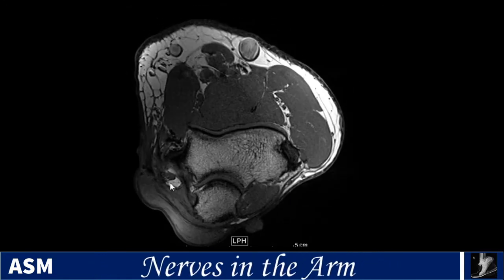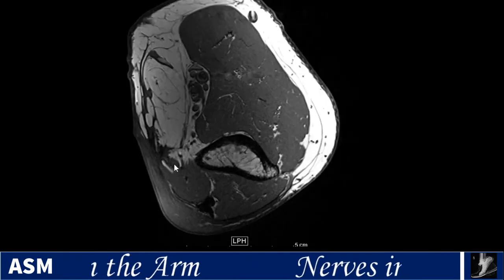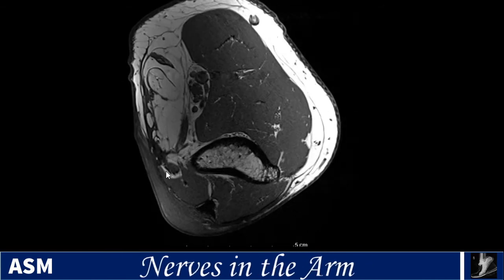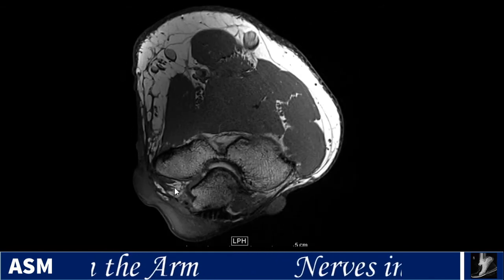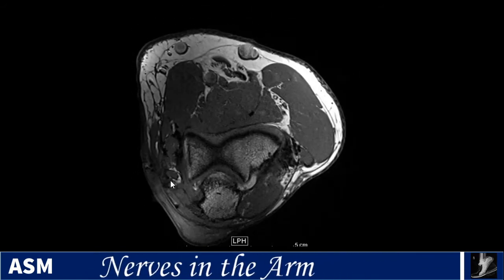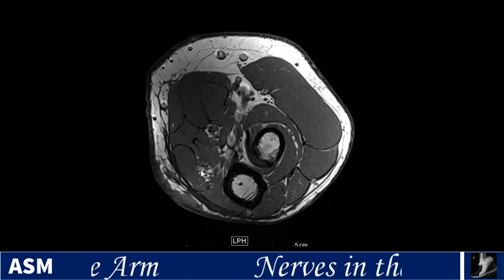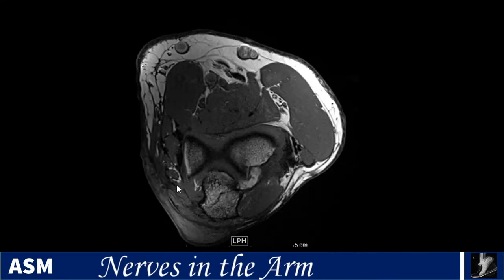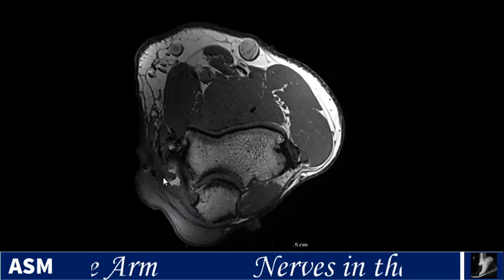The ulnar nerve arises from the medial cord of the plexus and runs in the posteromedial aspect of the arm. In this patient there is extensive scar tissue around it from prior surgery for ulnar neuropathy, in addition to the neurofibromatosis. The fascicular architecture is not normal at all. The nerve is very large and normalizes somewhat as it passes through the cubital tunnel, where the post-surgical change is also visible.